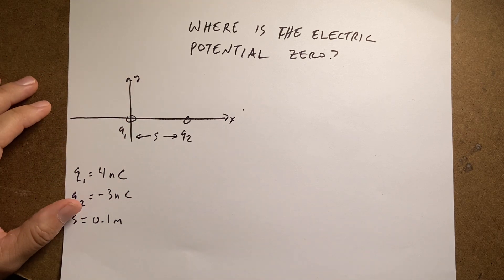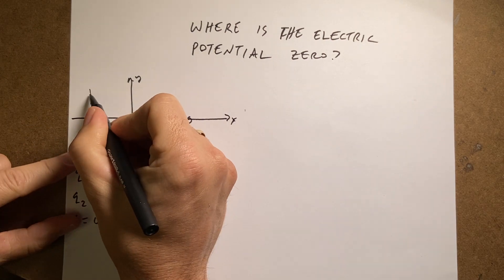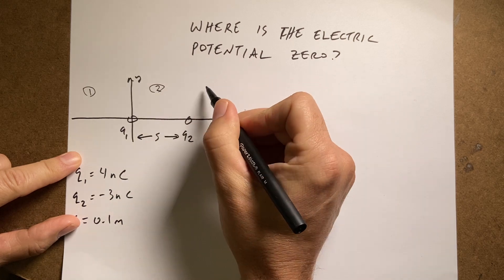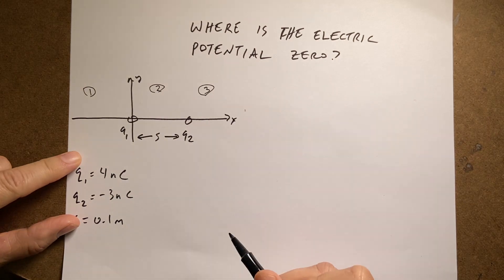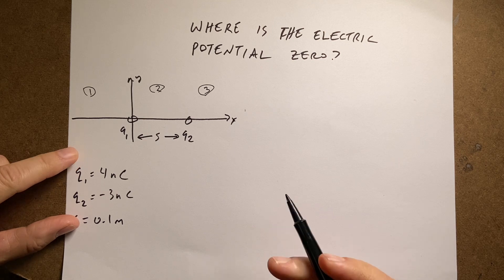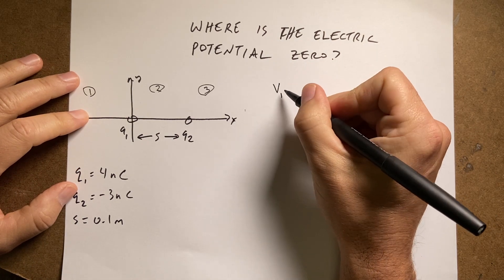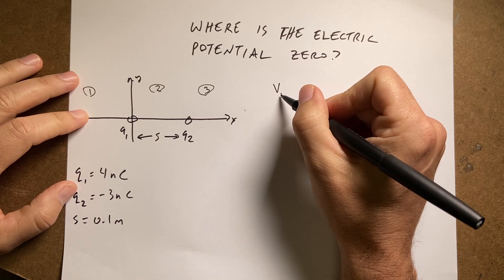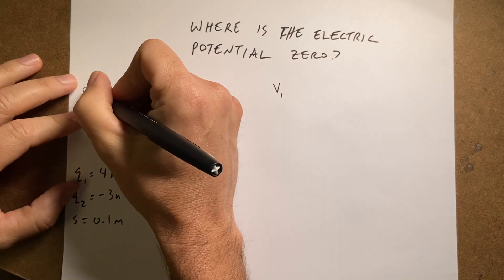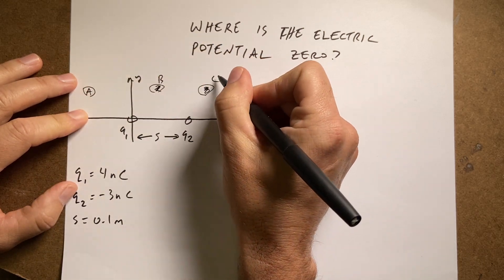Let's break this into three regions: region one, region two, and region three — let's call them A, B, and C — and think about which region we want to look at.